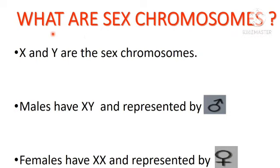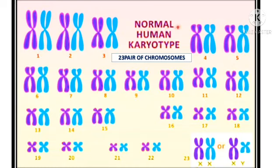Primary sex determination is done by sex chromosomes. X and Y are called sex chromosomes. Usually males are represented with XY — this symbol is used for males. Females have double X, and they are represented by this symbol. This is a normal human karyotype.